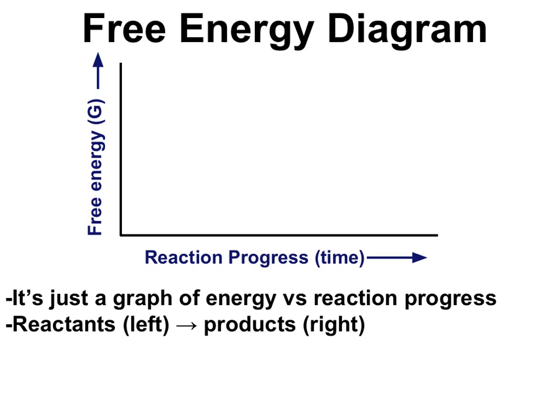Another essential part to understanding a free energy diagram is to connect back to chemistry basics. The chemical compounds that start off a chemical reaction are called reactants — they're at the start on the left of this diagram. Products are the chemical compounds left at the end of a reaction, so they're over here on the right. With reaction progress on the x-axis, the reaction starts with reactants and ends with products.